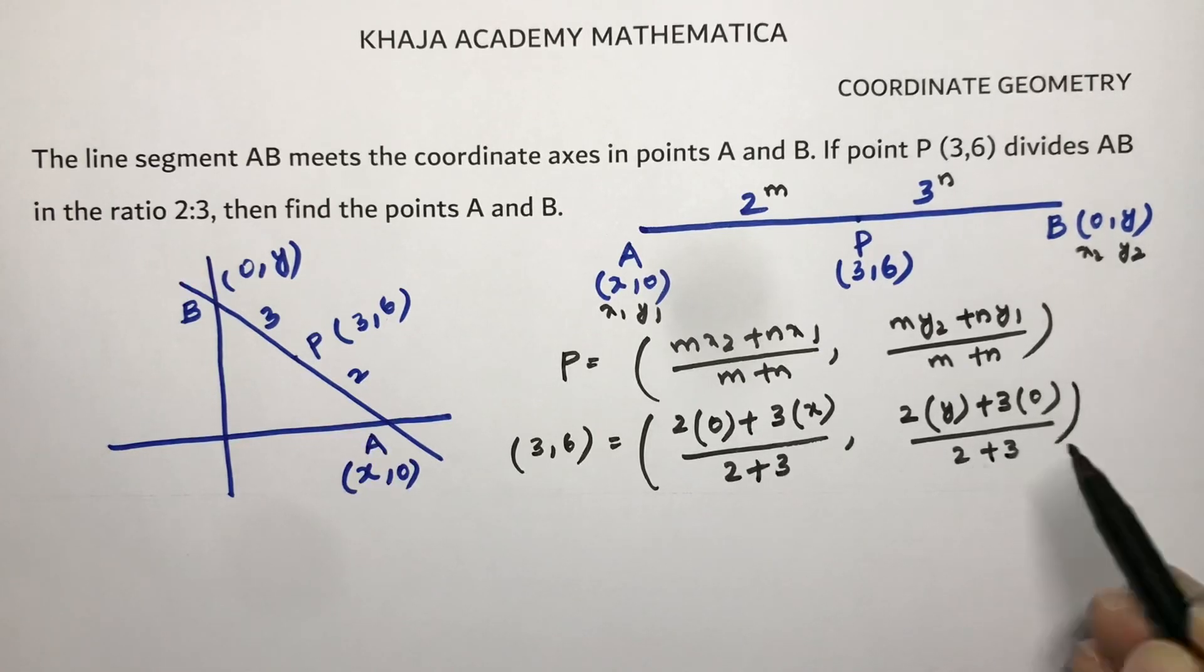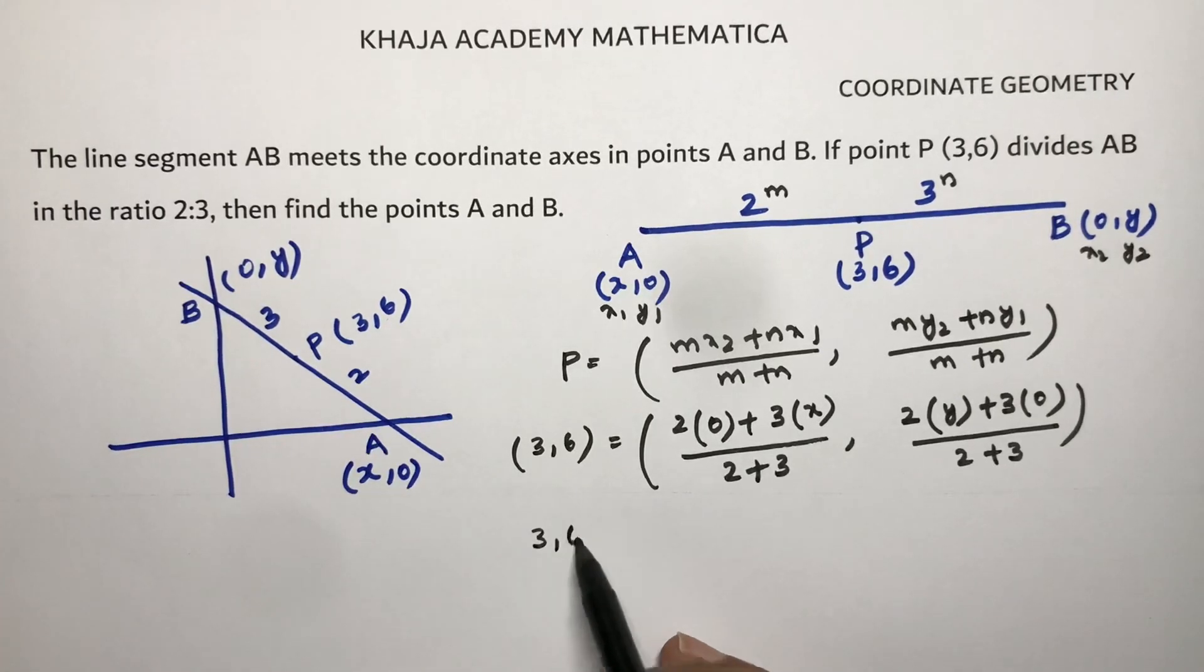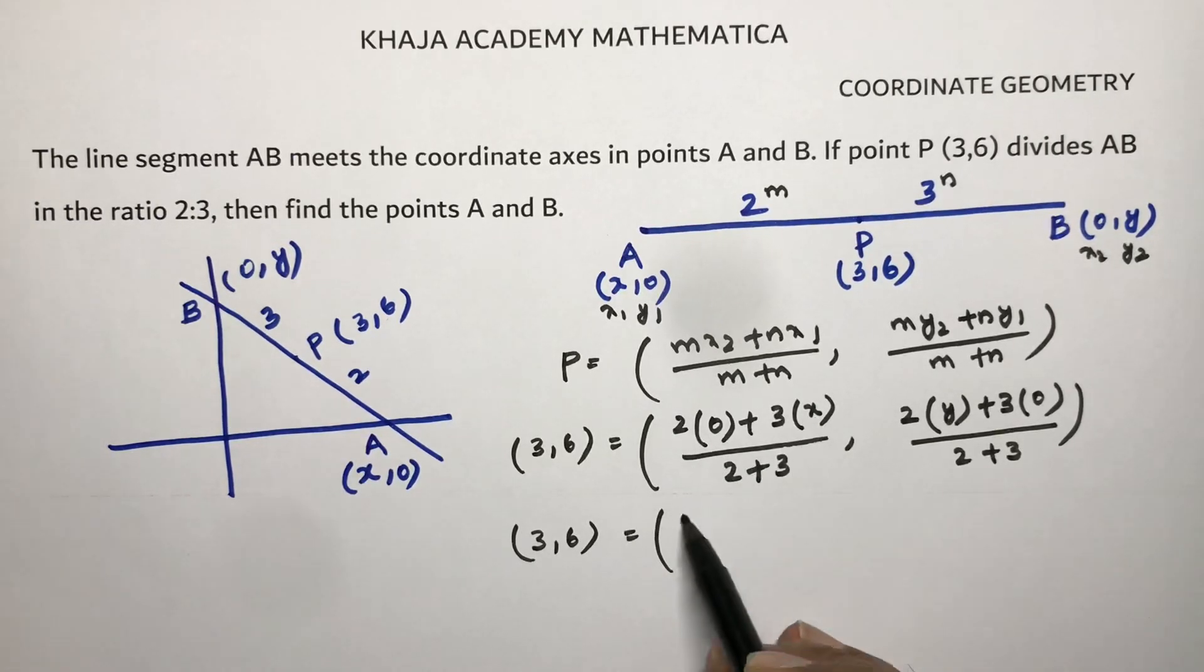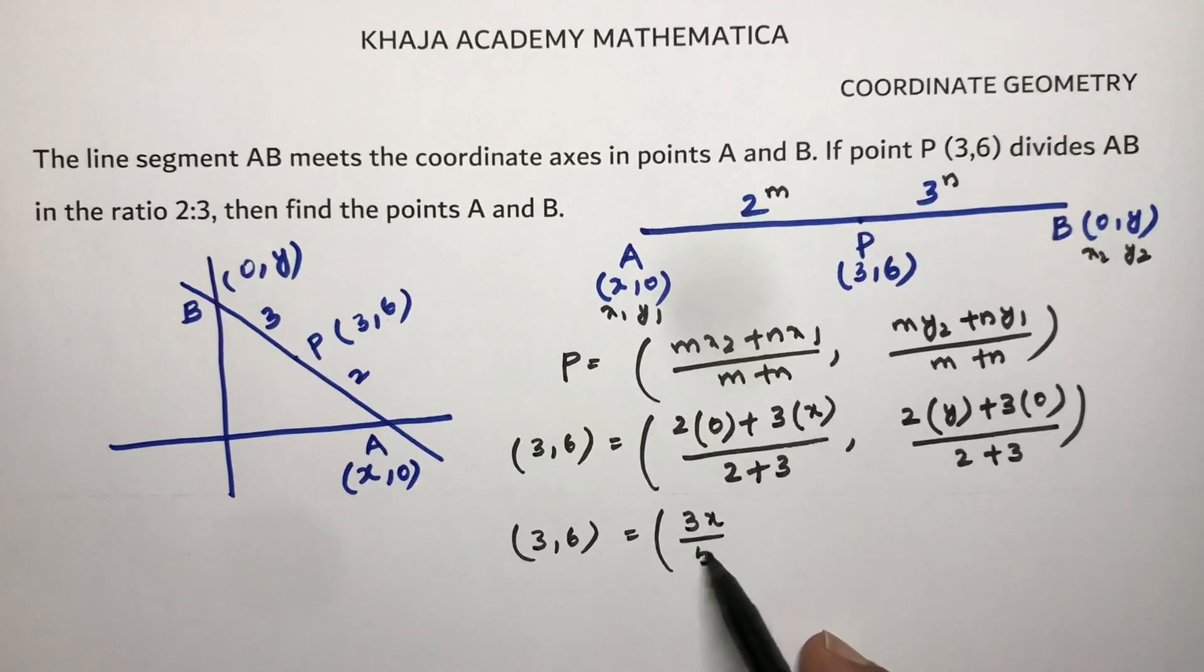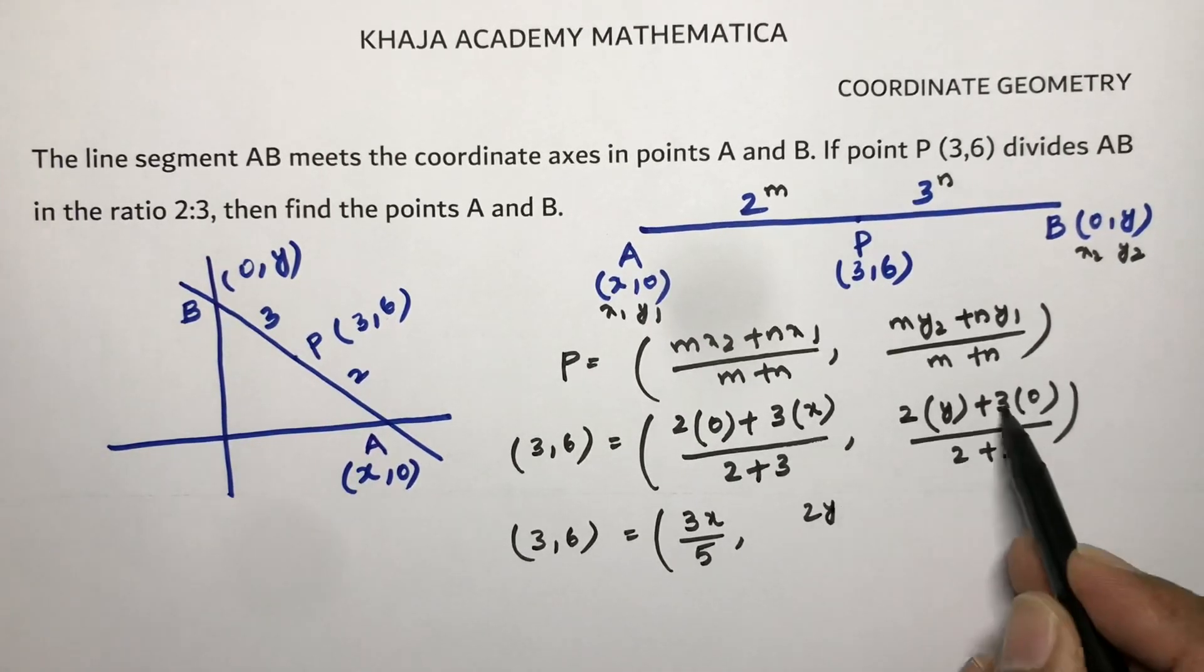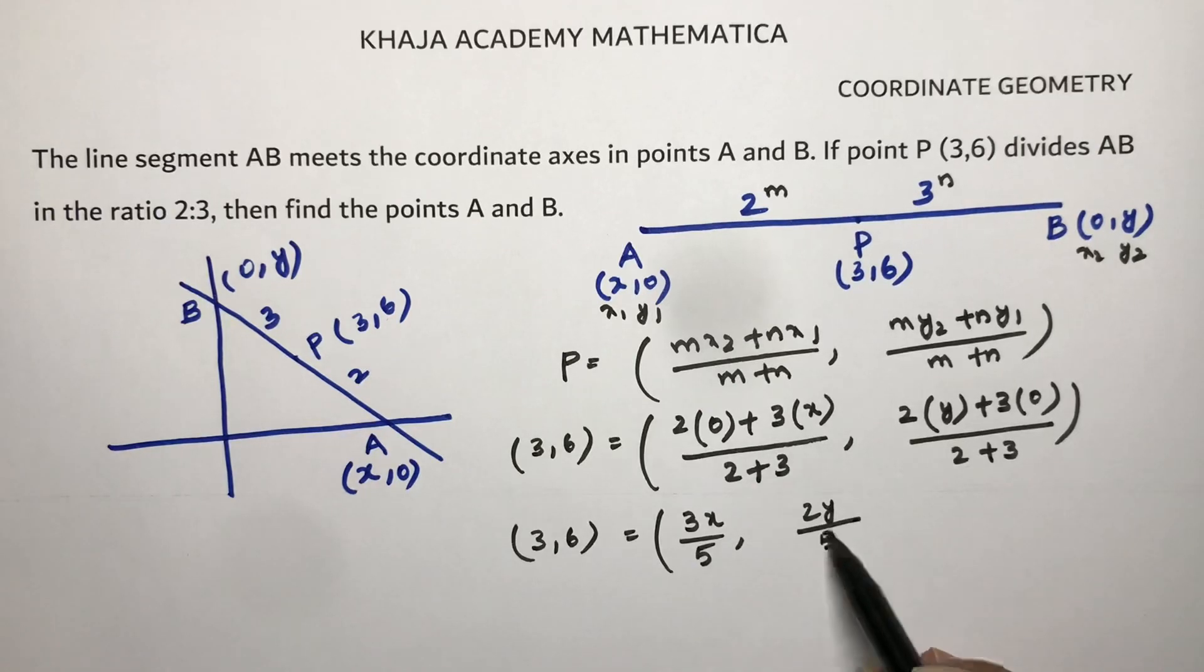So here, 3 = (2*0 + 3x)/5, which gives 3 = 3x/5. Here 2y plus 0, divided by 5, gives 6 = 2y/5. Now on comparing abscissa with abscissa and ordinate with ordinate...